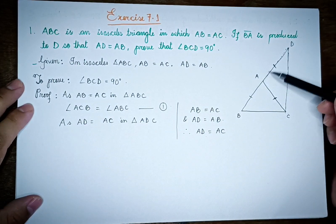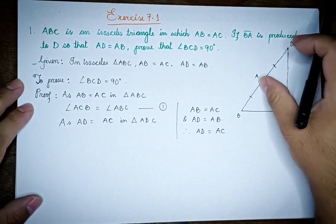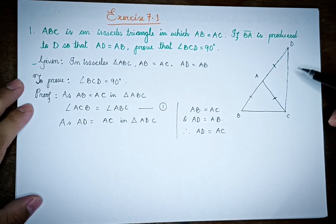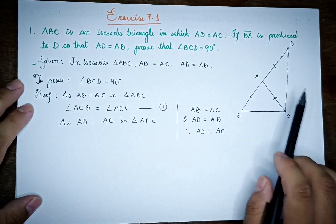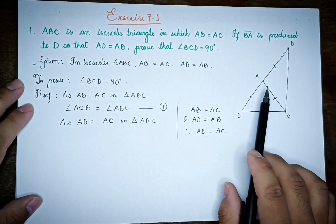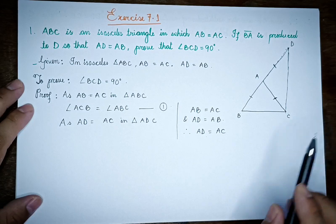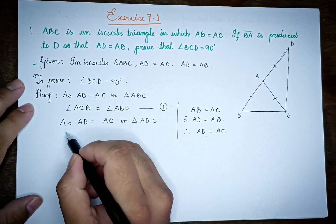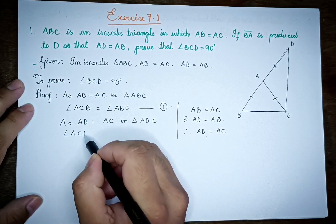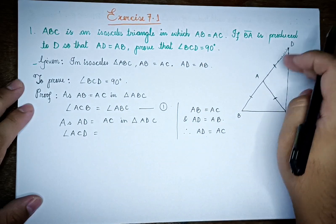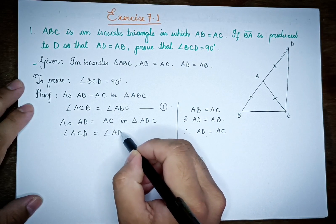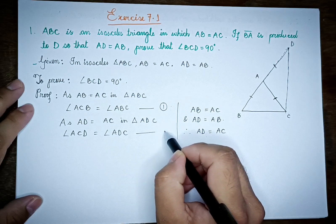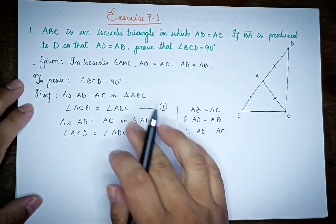Another thing is, if we look at the triangle with sides AD and AC, then if we go to the opposite angle, we put in the opposite angle. So if we have AD and AC, its opposite angle is angle ACD. Now, angle ACD is equal to angle ADC — equation number 2.